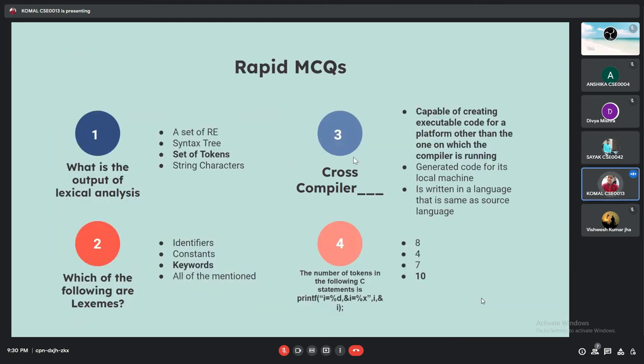Third question is what is cross compiler? So cross compilers are those which are capable of creating executable codes for a platform other than the one on which the compiler is running. For example, if we create or write a code in Windows and run it, cross compiler will create executable code for Windows and along with that it will also create code for Linux platform as well. So the first option is the answer.